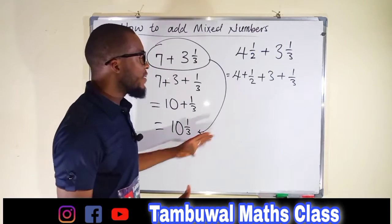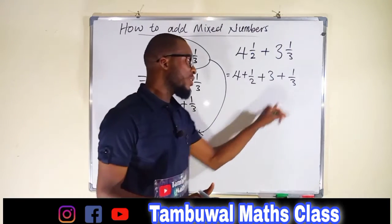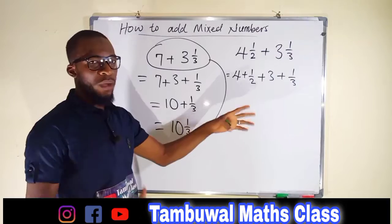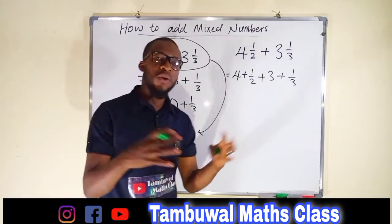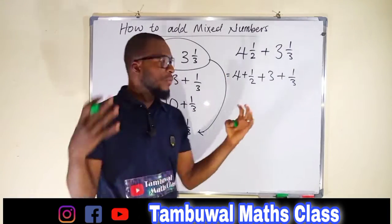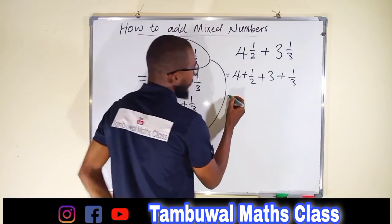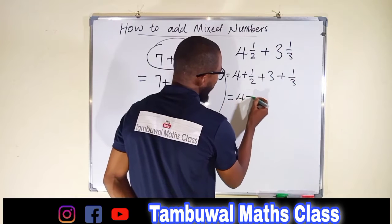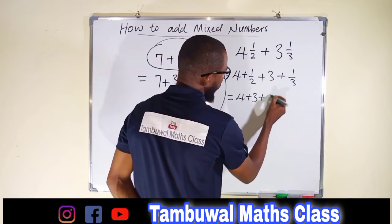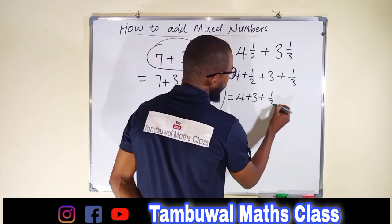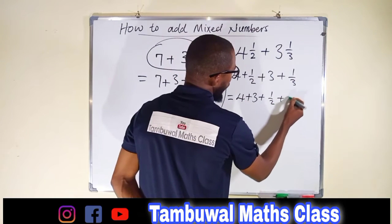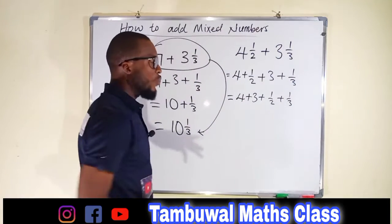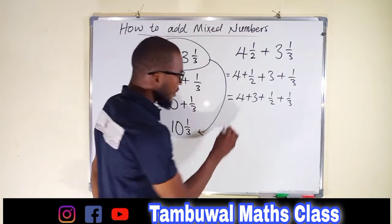Now we have fractions and whole numbers. We add the whole numbers together and the fractions together. So this is going to be 4 plus 3, then plus 1 over 2 plus 1 over 3. Adding the two whole numbers: 4 plus 3 is equal to 7.